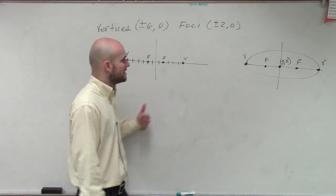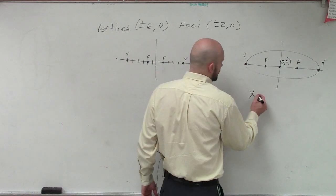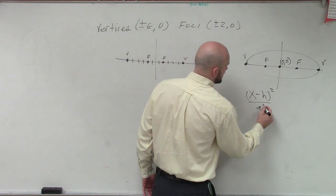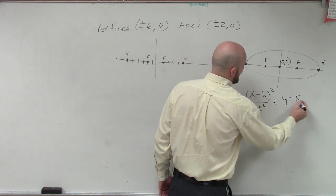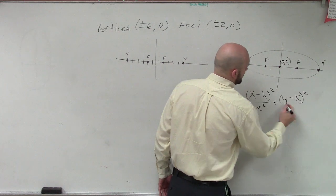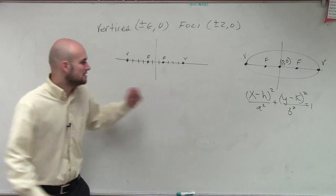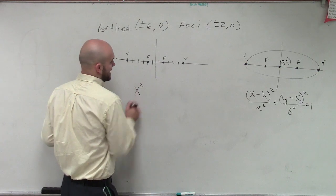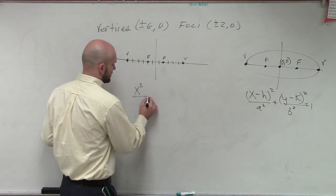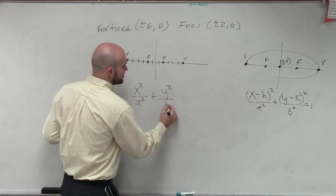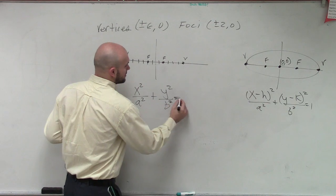So, we have the center is zero, zero. So, that helps us because now when we write our equation, we know our formula was x minus h. For a horizontal, then it would be a squared plus y minus k squared over b squared equals one. However, do we have an h and a k? Yes, they're zero, right? So, now we can just say x squared over a squared plus y squared over b squared equals one.